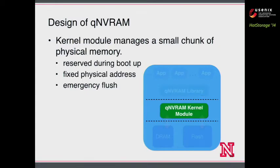The kernel module manages a small chunk of physical memory. This memory is reserved at system boot time so the virtual memory system won't see it. The physical memory is located at fixed physical addresses so we can find it even after reboot. The kernel module is also responsible for emergency flush — when the user tries to power off the phone, the data will be flushed to flash storage. For now, we only reserve about 20 megabytes of physical memory, because the page cache used by SQLite to enforce persistence is usually very small, and 20 megabytes is enough for most applications.